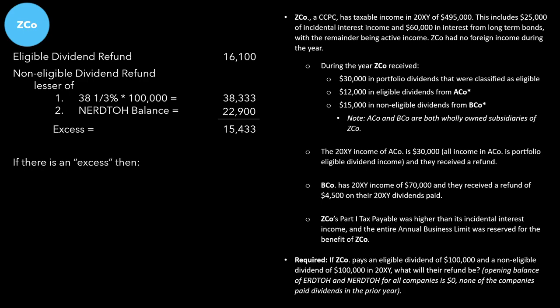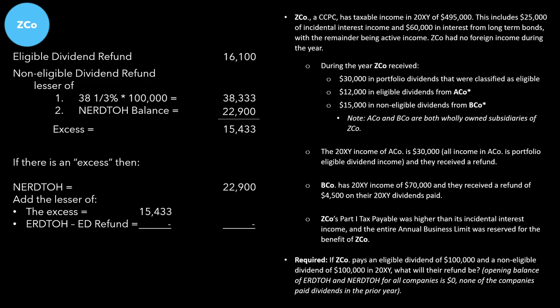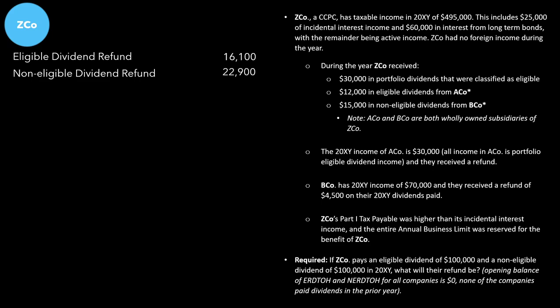If there is an excess, we should take our non-eligible RDTOH balance of $22,900 and add the lesser of: the excess of $15,433, compared to the eligible RDTOH balance minus the eligible dividend refund. The eligible RDTOH balance was $16,100, and the eligible dividend refund was also $16,100. So $16,100 minus $16,100 equals zero — meaning we add the lesser of those two amounts, which is zero. The final non-eligible dividend refund remains $22,900.